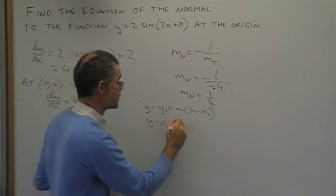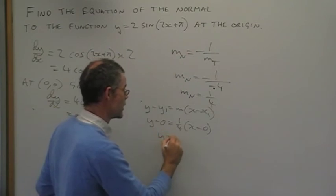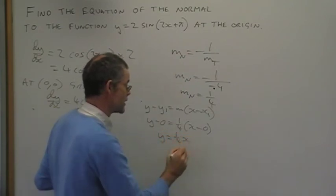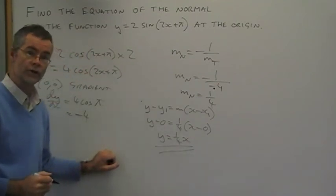y - 0 = 1/4(x - 0). In other words, y = (1/4)x. And that is the equation of the normal at the origin.